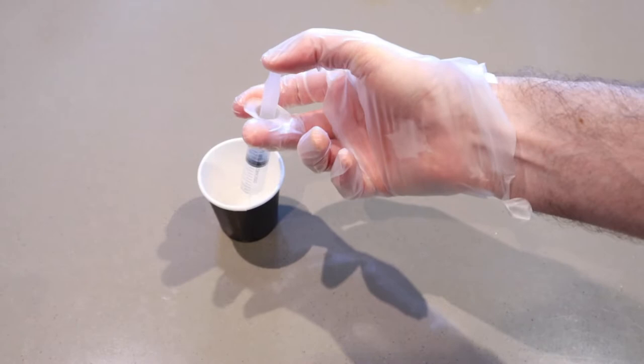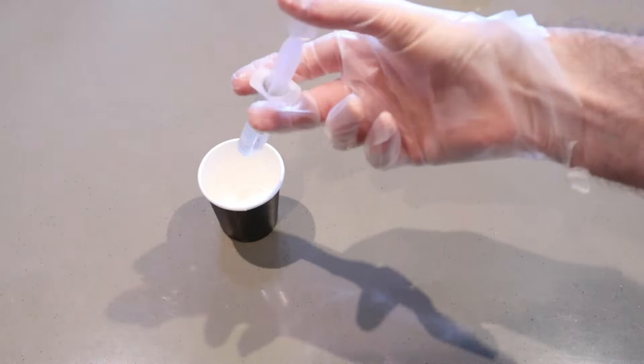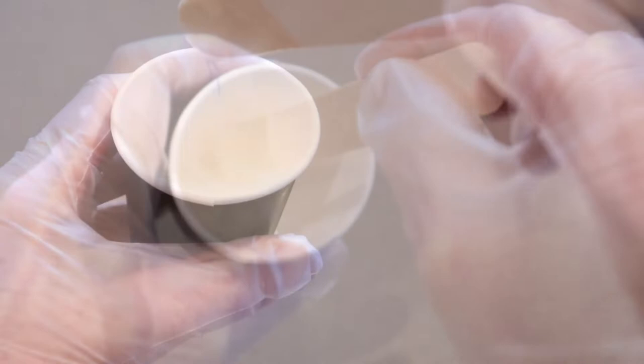Use your popsicle stick to stir for around 3 minutes. Pour around 2ml of the mixed resin into a separate cup. Add 4 drops of white alcohol ink and stir well.